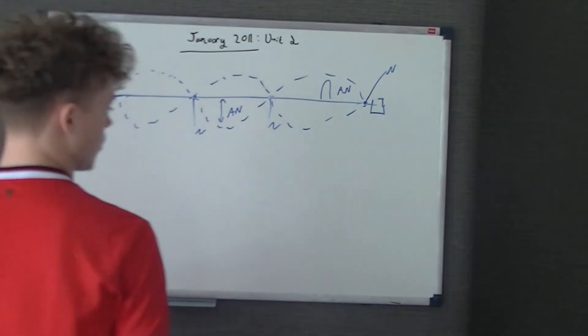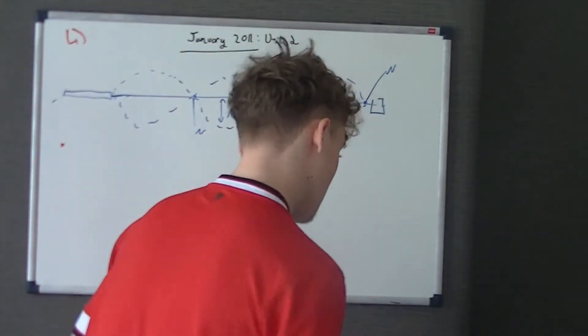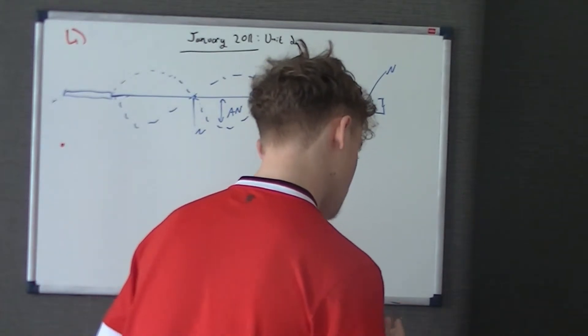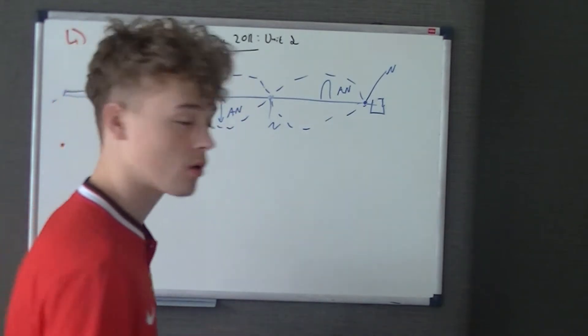So it says for question four, explain how a stationary wave is formed, and then describe the key features of the stationary wave. This is quite a nice one really, because it's already told you what to write in the question there.